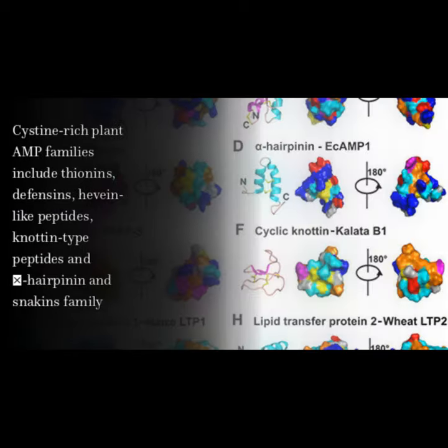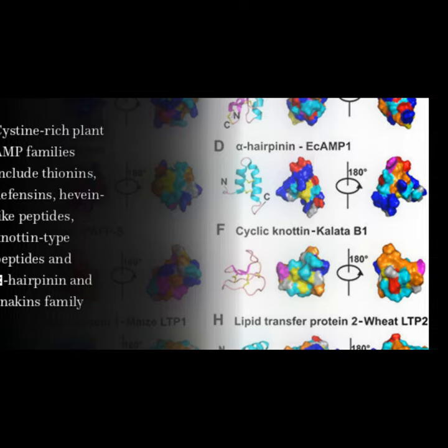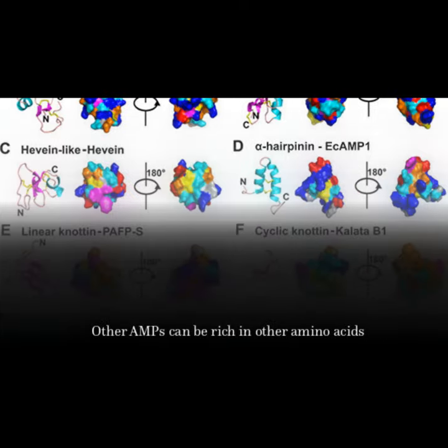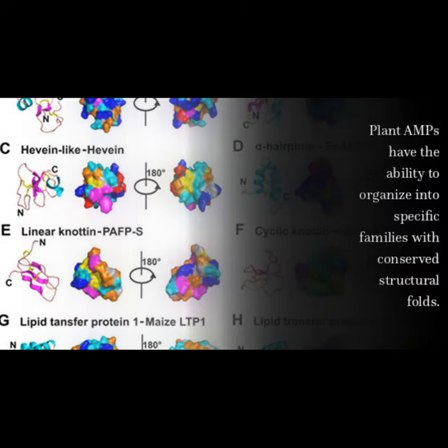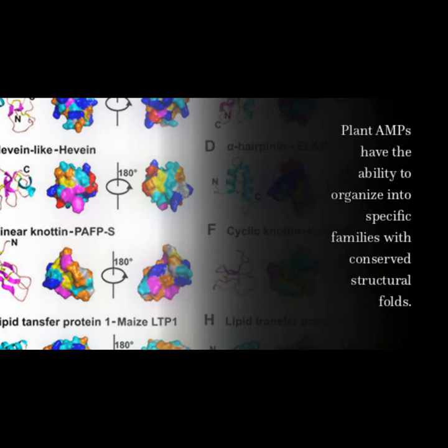Cysteine-rich plant AMP families include thionins, defensins, hevein-like peptides, nodentite peptides, and alpha-herpanin and snakeins family. Other AMPs can be rich in other amino acids. Plant AMPs have the ability to organize into specific families with conserved structural folds.